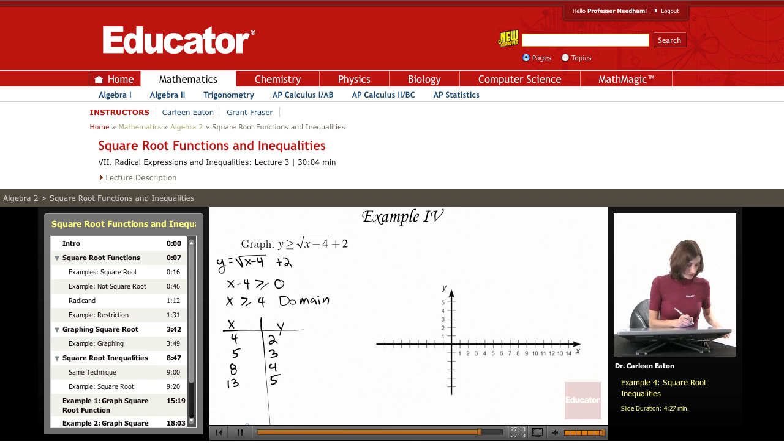So I have some values that I can plot out and I'm going to use a solid line because this inequality is greater than or equal to. It's not a strict inequality. So when x is 4, y is 2, and that's the start of my graph. I can't define this function for values less than 4. When x is 5, y is 3. When x is 8, then y is 4. And when x is 13, y is 5, so right about there. And this is a solid line that I'm going to use. And the graph begins here.